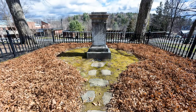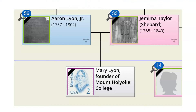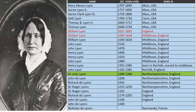Here we see her tombstone and her grave on the property of Mount Holyoke College. We have her mother and her father, and we can go up either of these lines to see if there was a coat of arms. For this video we are going to start with the father and the Lyon lineage.